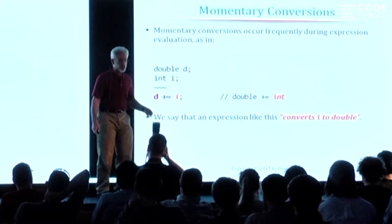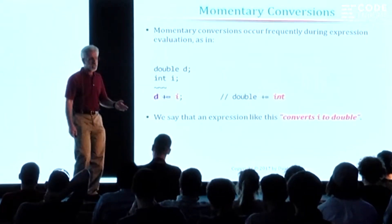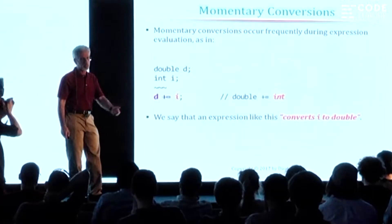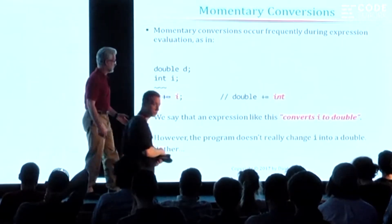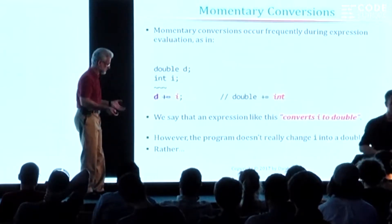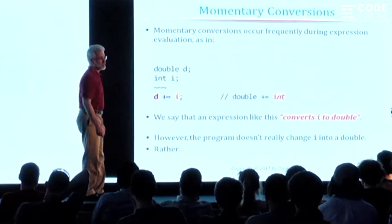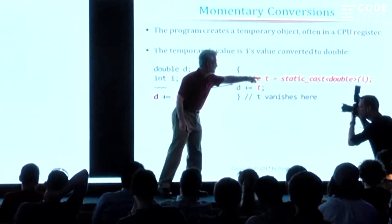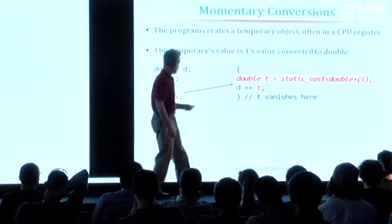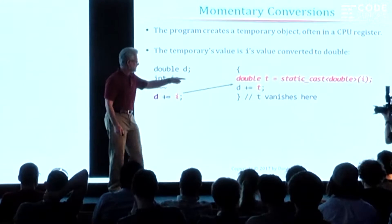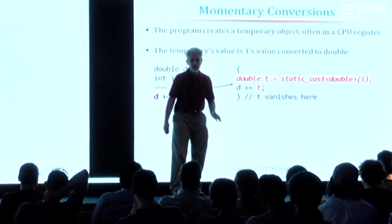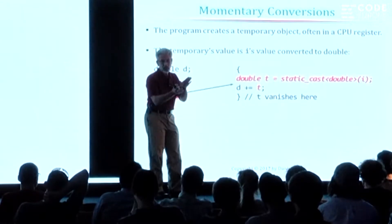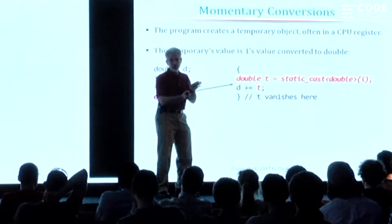Now, informally, what we often say is it converts i into a double. But that's not really what happens — it's a little more complicated than that. It doesn't really change i into a double. Here's what's really happening: the compiler will create a temporary object of type double and initialize it with the value of i converted from integer into double. Then it will use that temporary to complete the evaluation of the expression. The lifetime of the temporary object is limited to a very short span in the program.